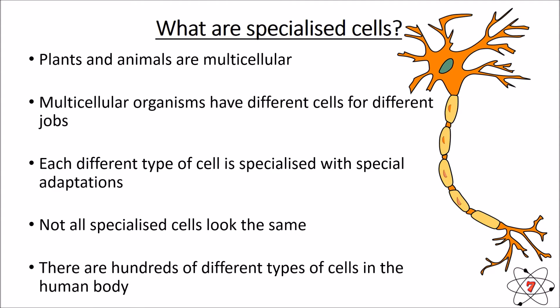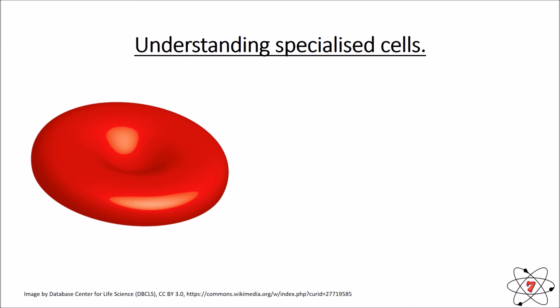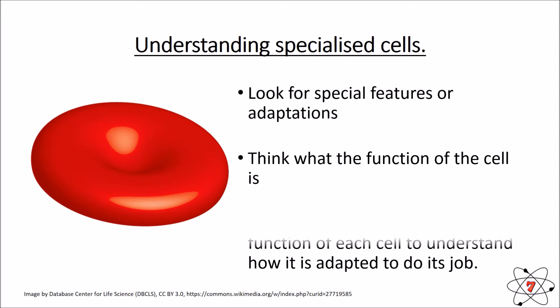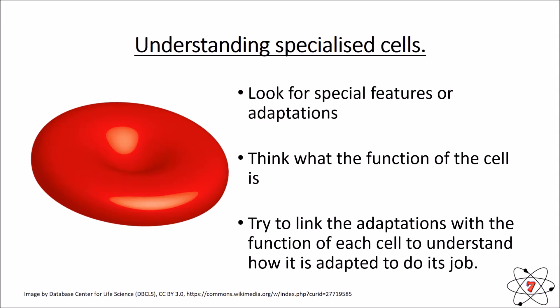Inside the human body there are hundreds of different types of specialized cells. We're going to look at a few today — you're not expected to know them all. When we look at specialized cells, think about: what special features they have, how they differ from the idealized cell, what the job of the cell is, and how those adaptations help the cell do its job.